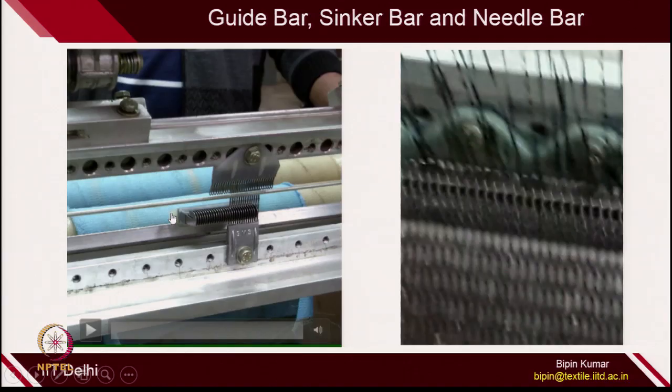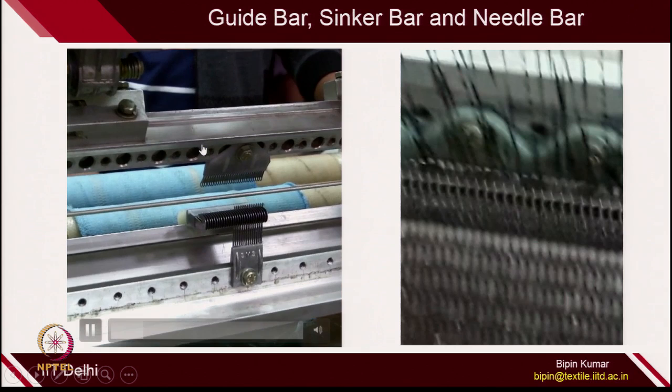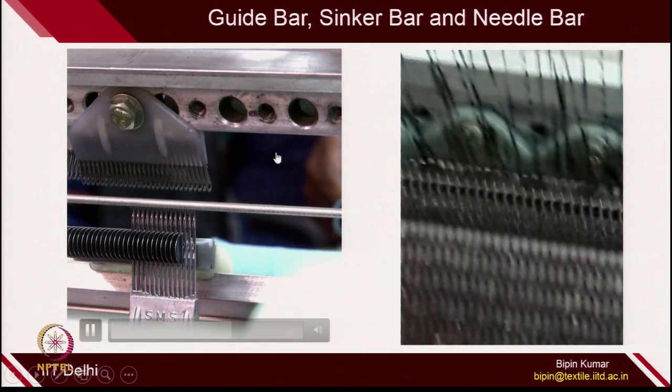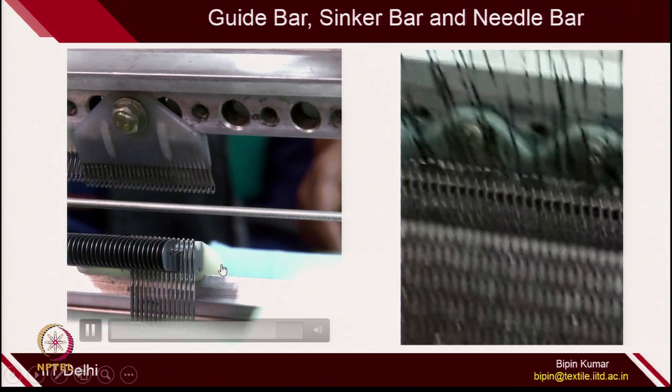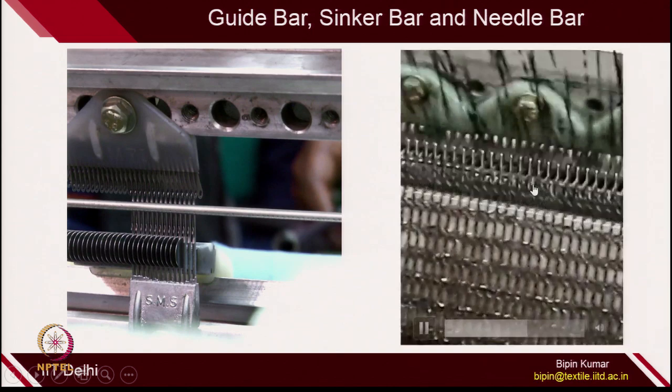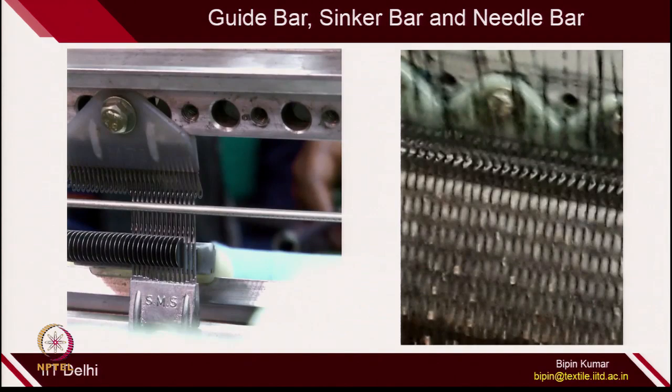Exactly those same functions are happening here on the latch needle. The guide is swinging, providing yarn, then swinging back. The sinker is also moving in the same fashion. If you compare that sequence with this video, you can understand the process. On running conditions it is very difficult because all guides, all needles, and all sinkers are active simultaneously, but the same knitting action is happening on the machine.